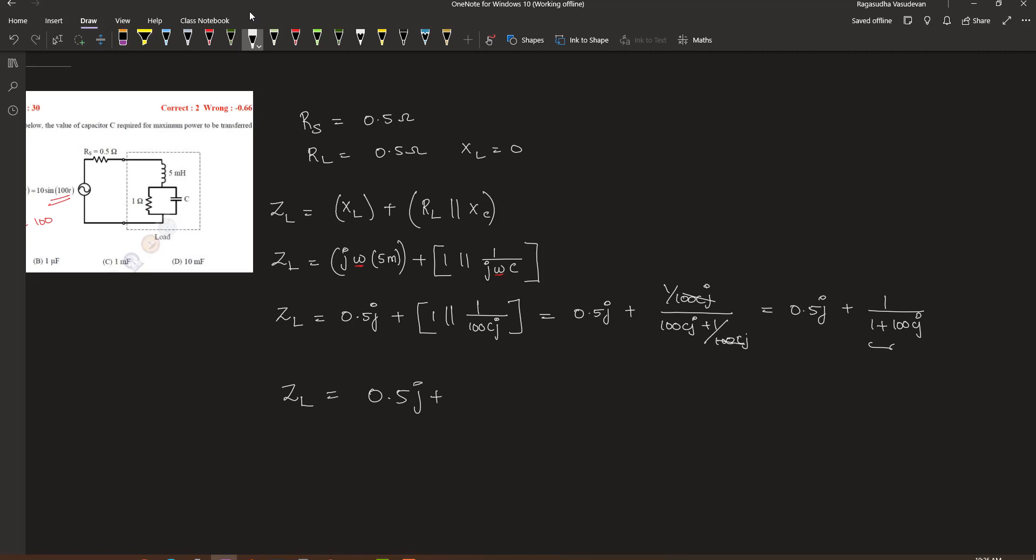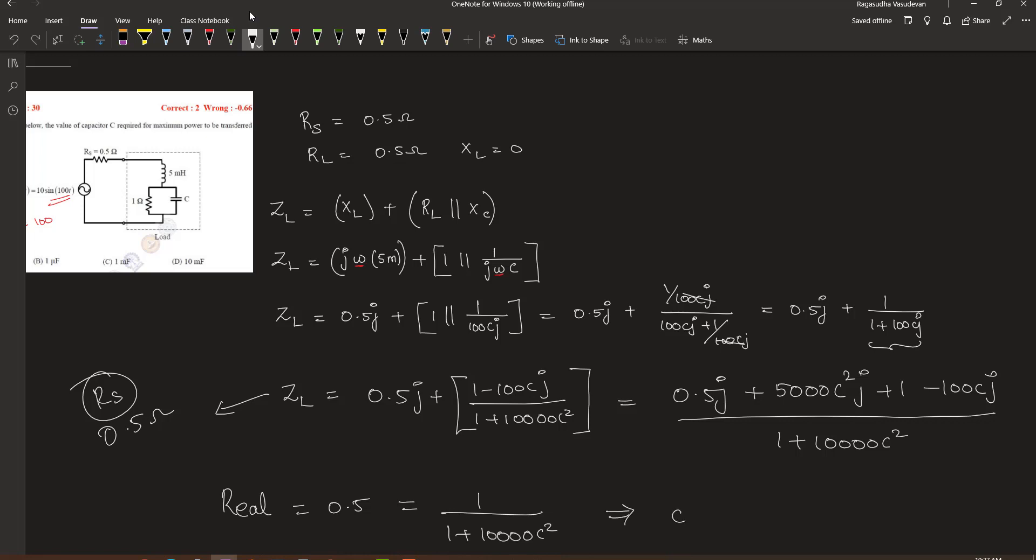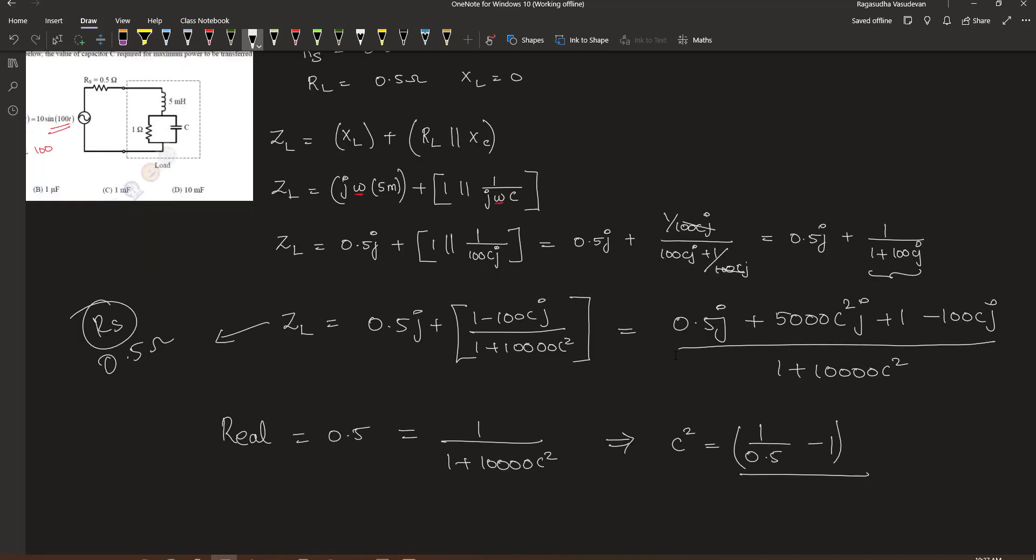So this should be equal to 0.5j. Therefore, 0.5j equals 0.5j plus 1 divided by 1 plus 100Cj. Solving this, 0.5j minus 0.5j equals 1 divided by 1 plus 100Cj, which gives us 0 equals 1 divided by 1 plus 100Cj. This simplifies to C equals 1 divided by 100, which equals 10 millifarad.